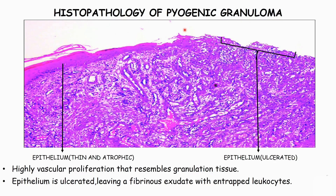Histopathology of pyogenic granuloma. The microscopic examination of pyogenic granuloma shows highly vascular proliferation that resembles granulation tissue. The epithelium overlying the surface is usually ulcerated, leaving a fibrinous exudate with entrapped leukocytes.